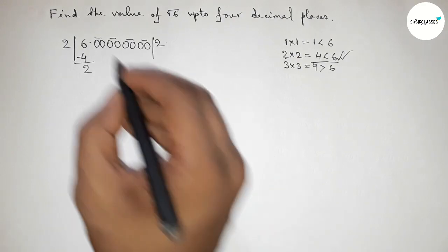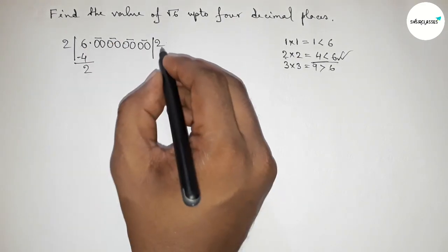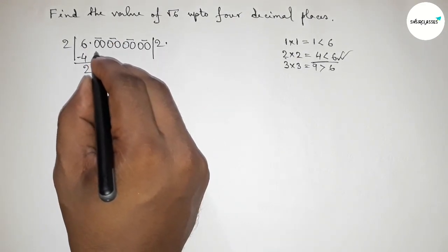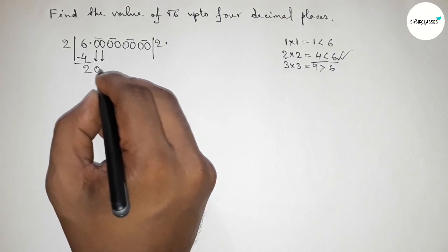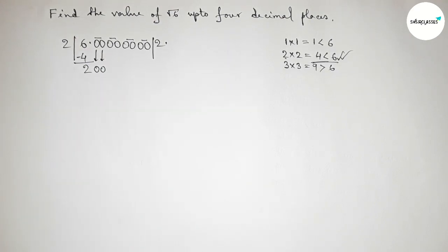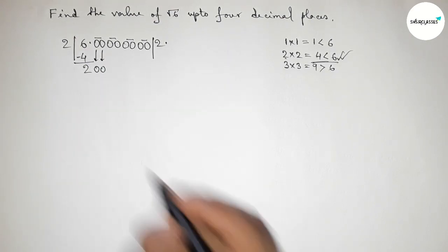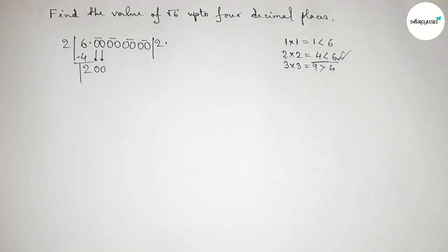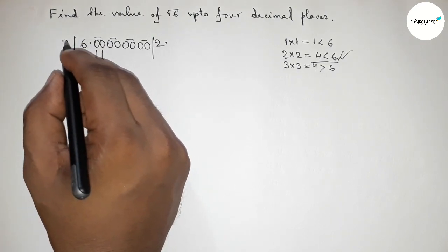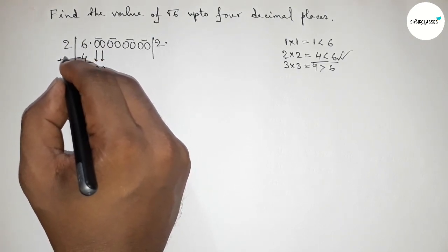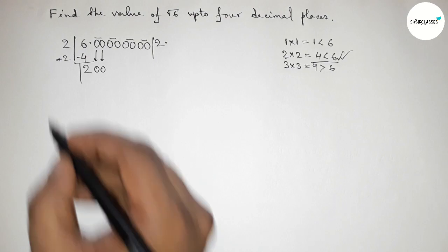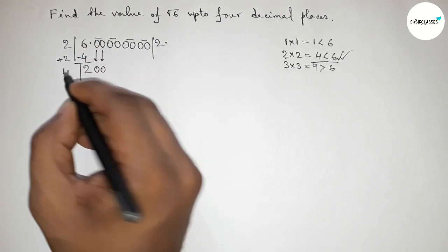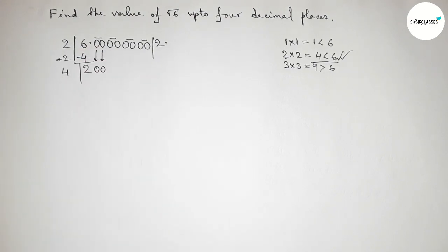Subtracting: from 6 minus 4 = 2. This point will go here. Now write down the first pair of zeros and draw a division line. The important step here: the number is 2, so we add 2 + 2 = 4. Now we have the number 4 and we need to find the next digit.